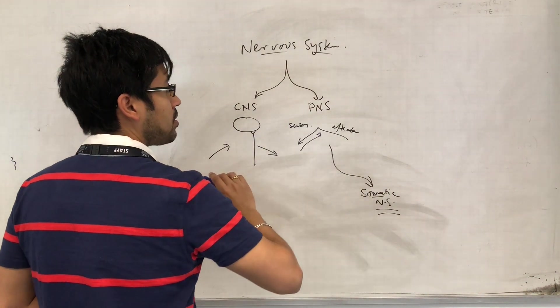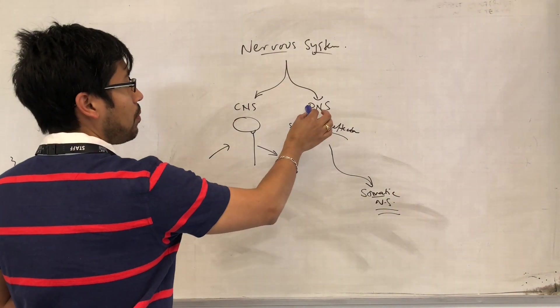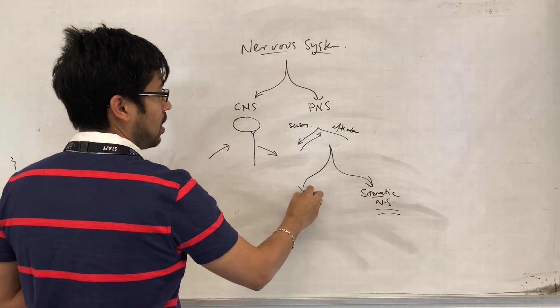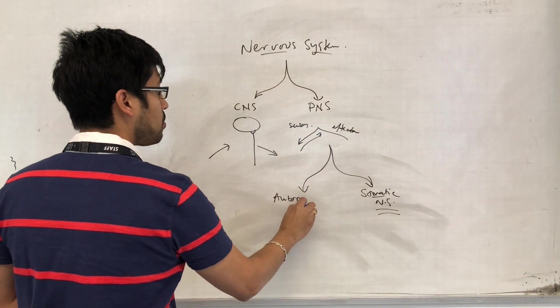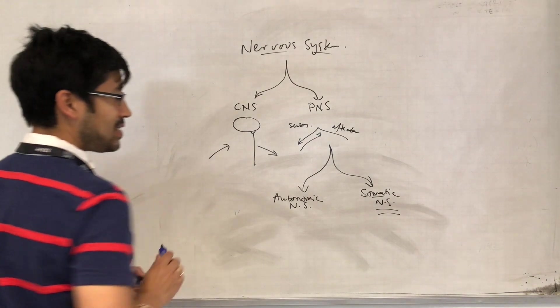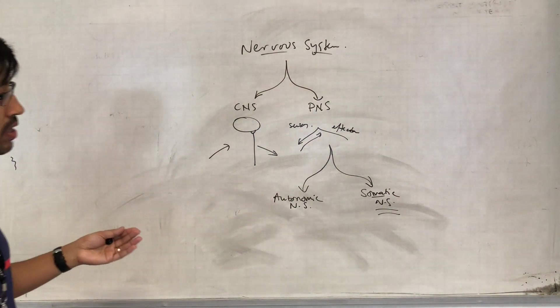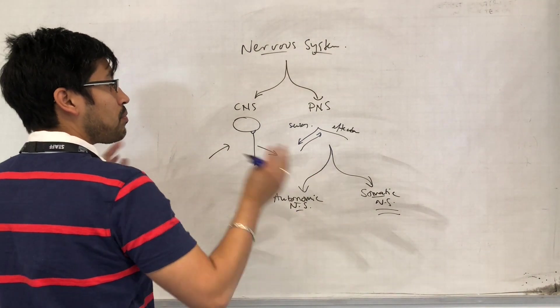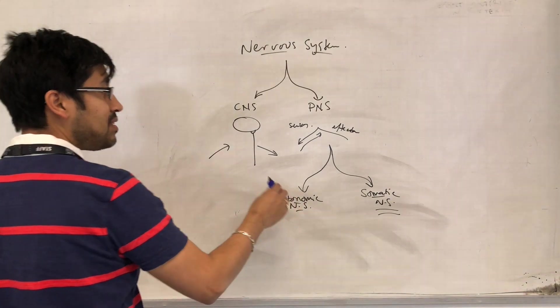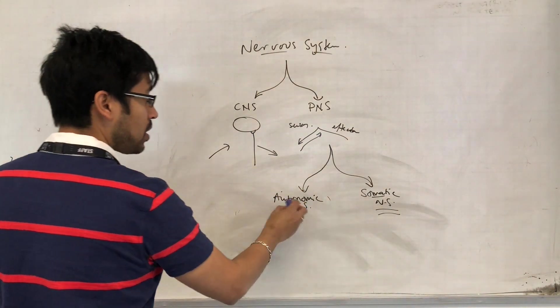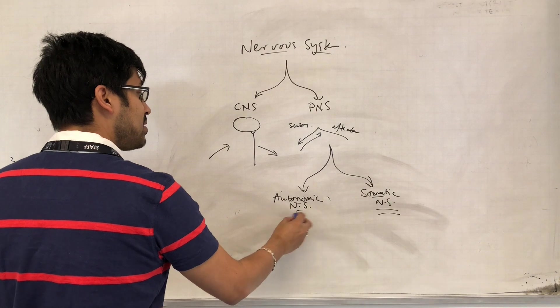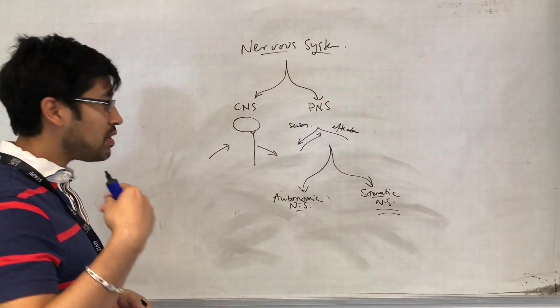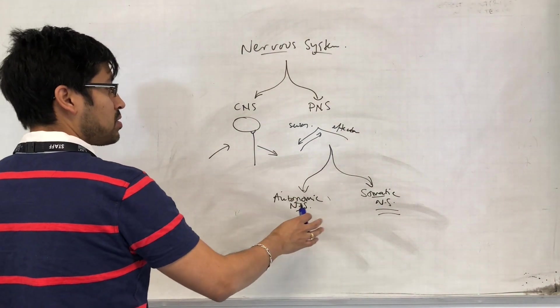But then you also have things that are involuntarily controlled, and that forms the autonomic nervous system. You don't consciously control these aspects of your body, but they do get controlled by other mechanisms. The autonomic nervous system controls things like heart rate, digestive system, vasoconstriction, vasodilation - things not under conscious control.